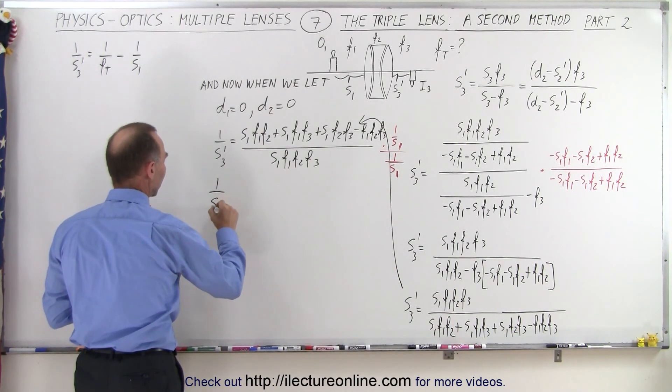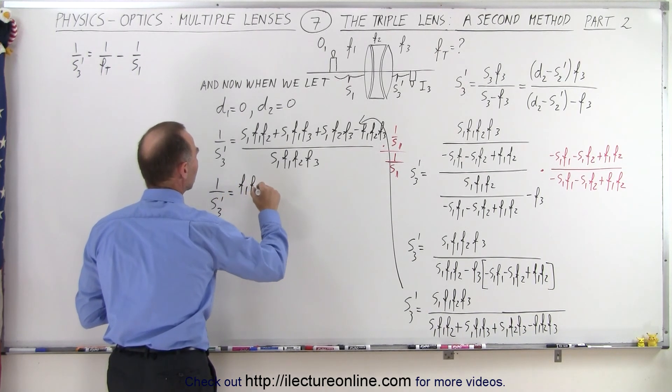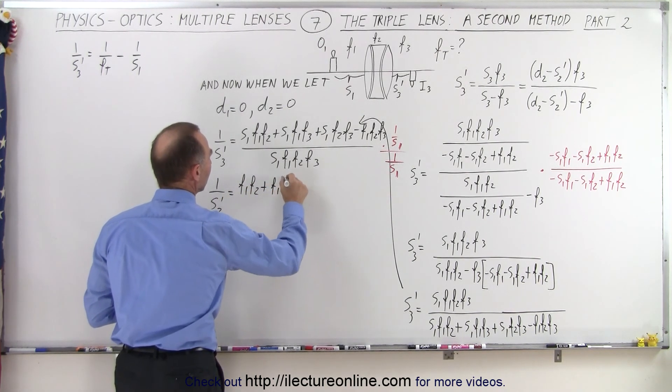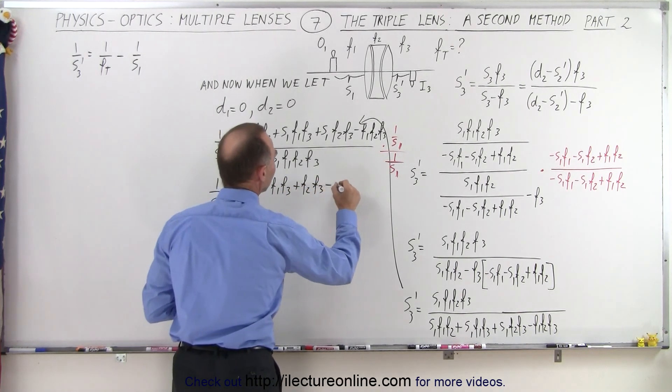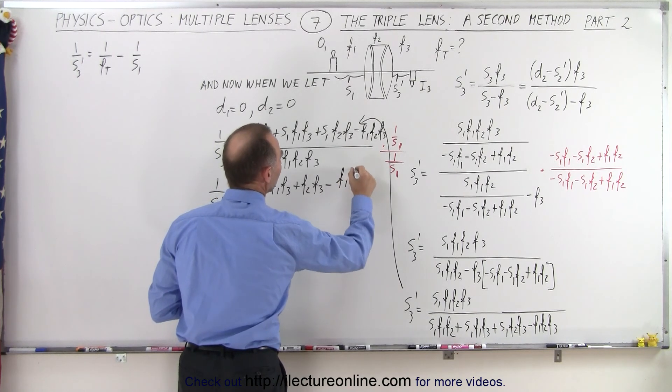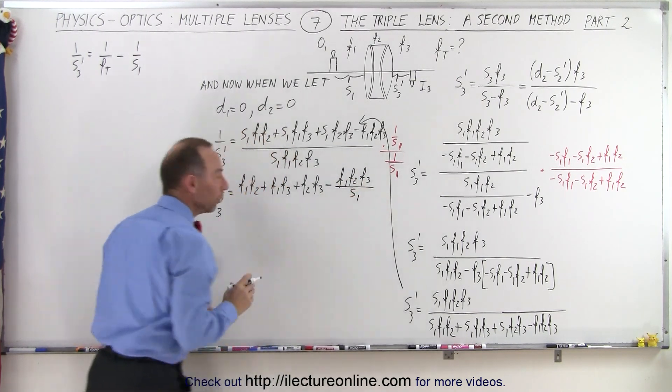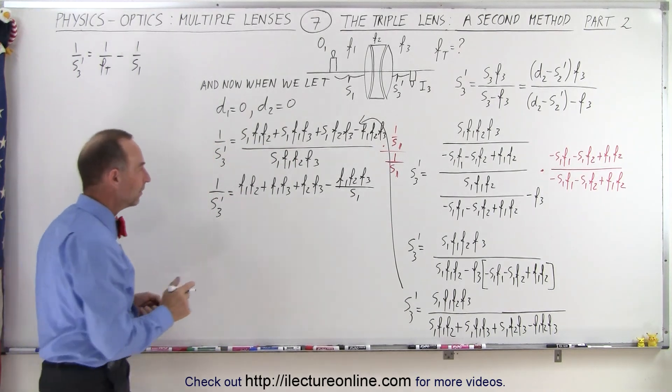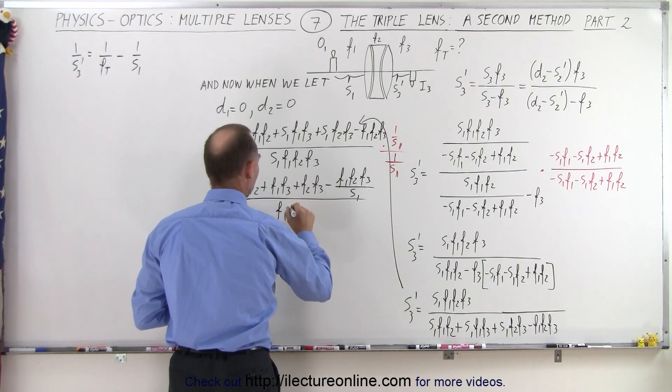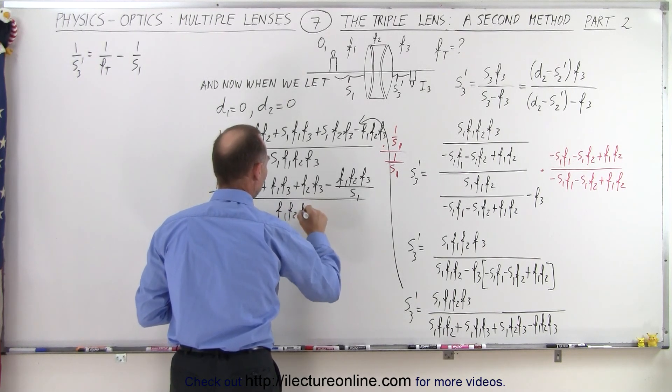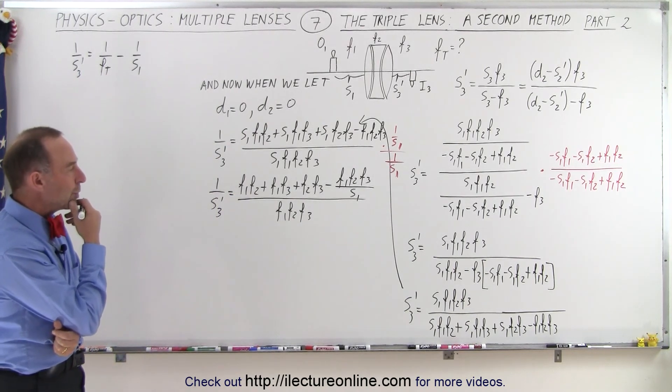1 over s3 prime is equal to f1 f2 plus f1 f3 plus f2 f3, and then minus f1 f2 f3 over s1. That's the only term that did not have an s1 in it. And then we take the whole thing and divide it by f1 f2 times f3.